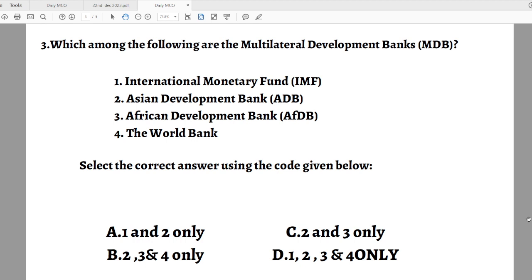These are the Multilateral Development Banks. Select the correct answer in the code given below. Options are: A. One and two only. B. Two, three and four only. C. Two and three only. D. One, two, three and four only.